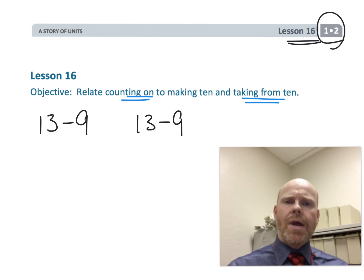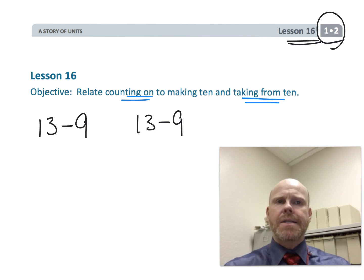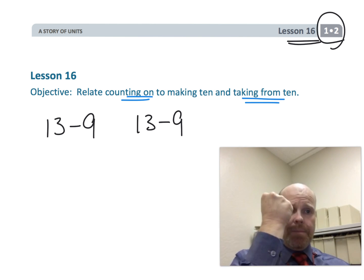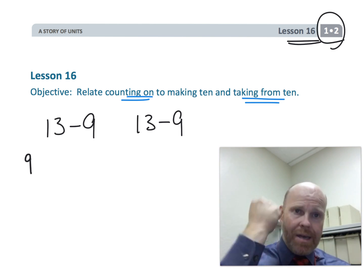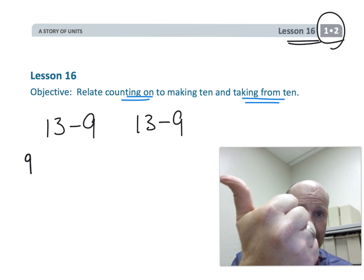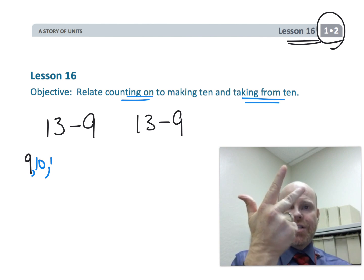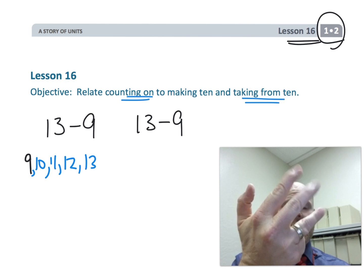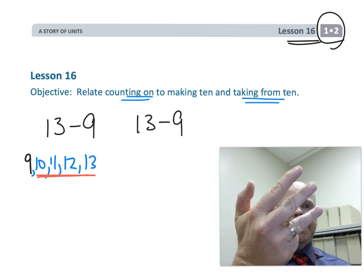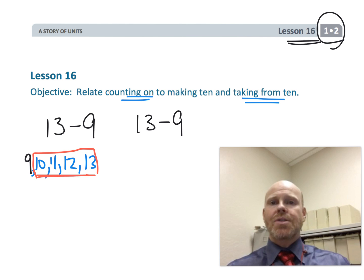Let's take 13 minus 9 as a quick recap. We've got 13 minus 9. In the count on method, we're gonna say 9, and you punch the air with a fist and you say 9, and then you go 10, 11, 12, 13.